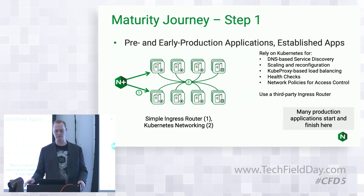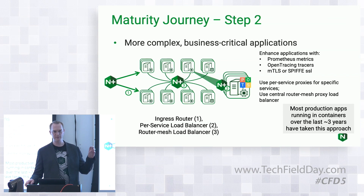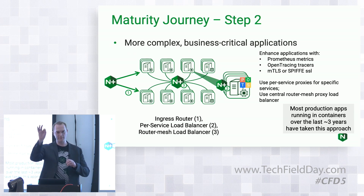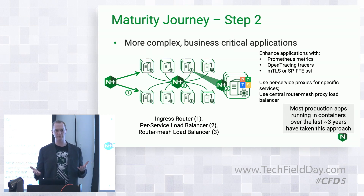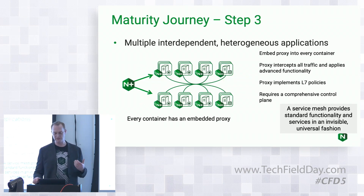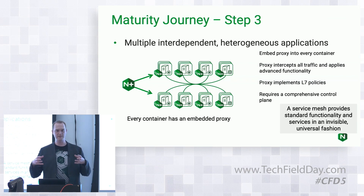There is an interim step before a service mesh that we see the next set of customers tap into, which is essentially deploying nginx as a specialized load balancer within that environment — not quite a load balancer or proxy for every single microservice, but instead a router mesh, if you will, instead of a service mesh. It handles all of that traffic, allows you to dynamically insert new services and scale up. At this point we're talking about dozens of microservices up to around a hundred. It's really not until companies are in the hundreds to thousands of microservices where it makes sense to have every single service with its own proxy, all managed and orchestrated via the service mesh.